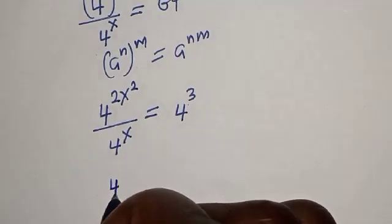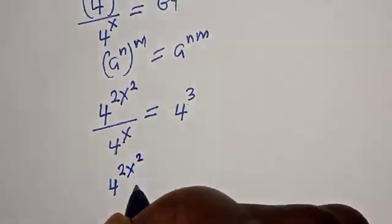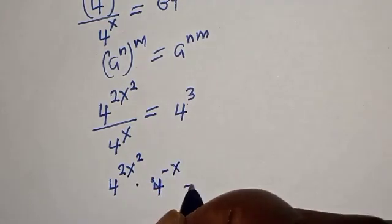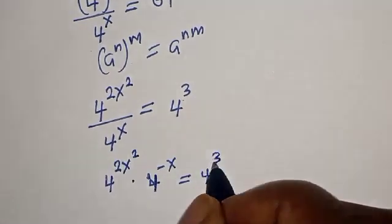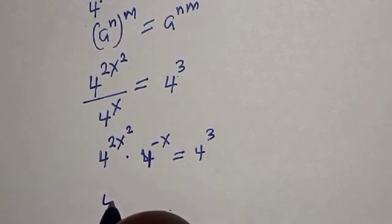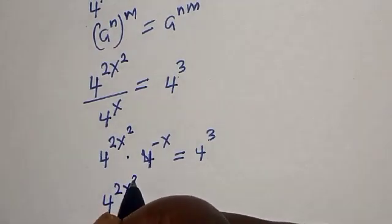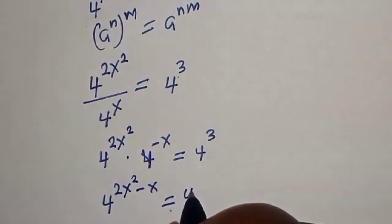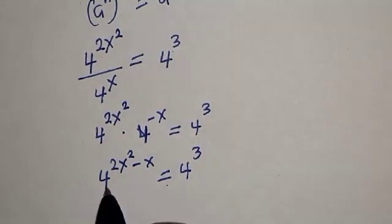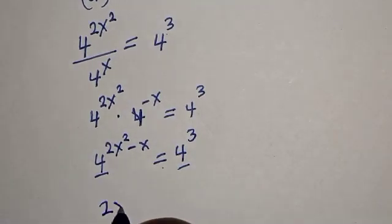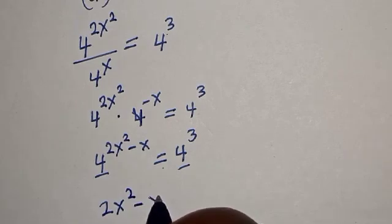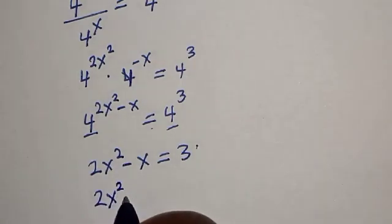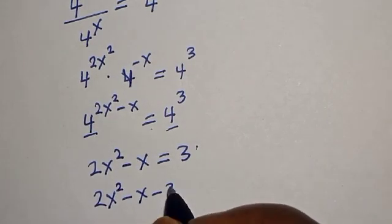We have 4 raised to power 2s squared, multiplied by 4 raised to power minus s, equal to 4 raised to power 3. So this gives 4 raised to power 2s squared minus s, equal to 4 raised to power 3. We have the same base 4, so we have 2s squared minus s is equal to 3.